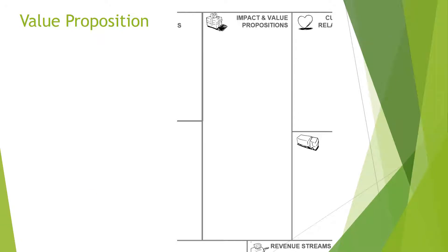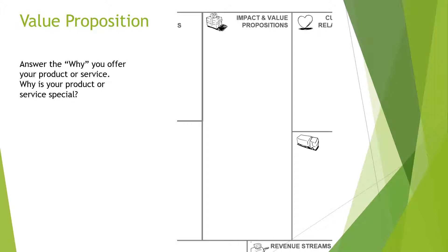We then move on to the middle block — this is the impact and value proposition. This is really all about the why: why are you offering this product or service to the customer segments you already identified? What makes your product or service special? Why do your customers want to come and do business with you as opposed to any potential competition? This is almost like the mission statement of your organization — not explaining what you do, but getting into the higher-level purpose of why you're in business and what you're looking to accomplish.